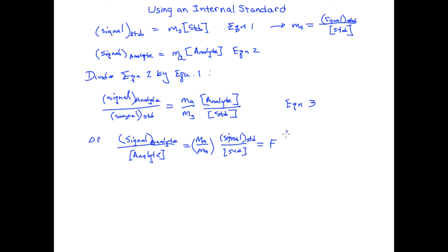I'm going to replace the ratio of the response factors with a quantity F. We'll make this equation 4. The most common issues that lead to a change in response factor for an analyte will also cause a similar change in the response factor for the standard. So if the response factor for the analyte increases by about 10%, so does the response factor for the standard. That means F will remain constant and we automatically adjust for these variations that were out of our control.